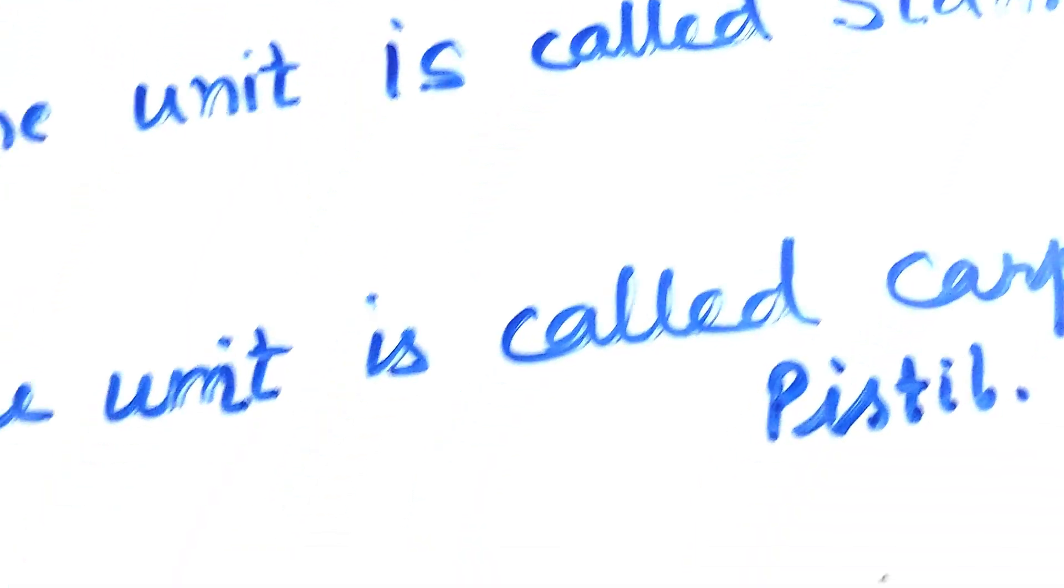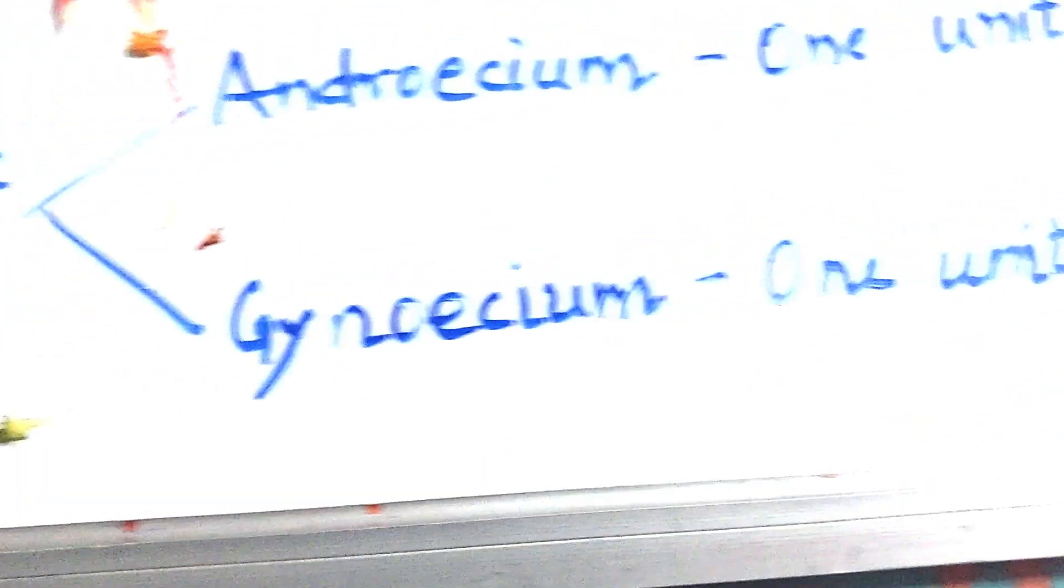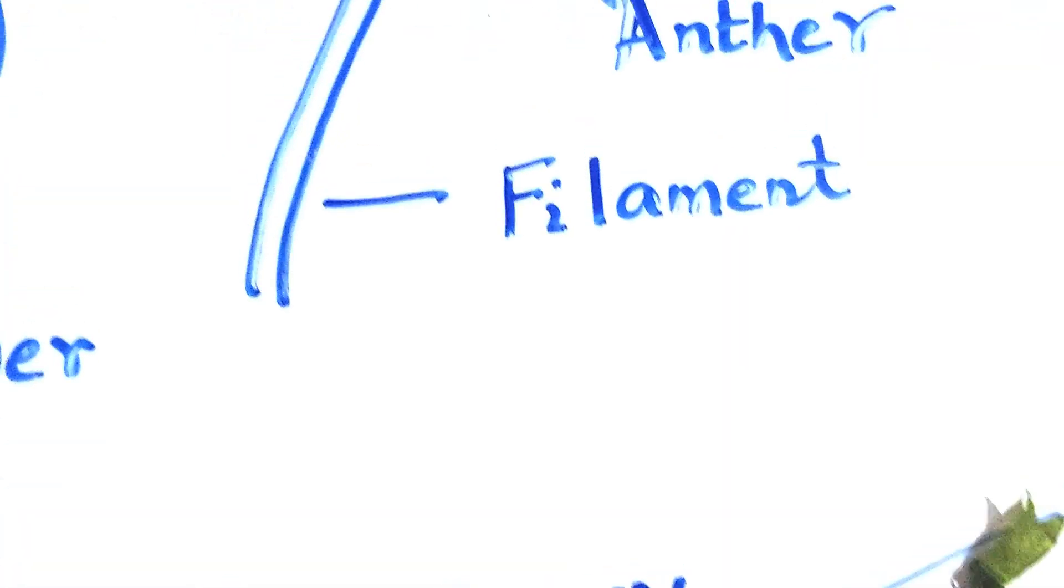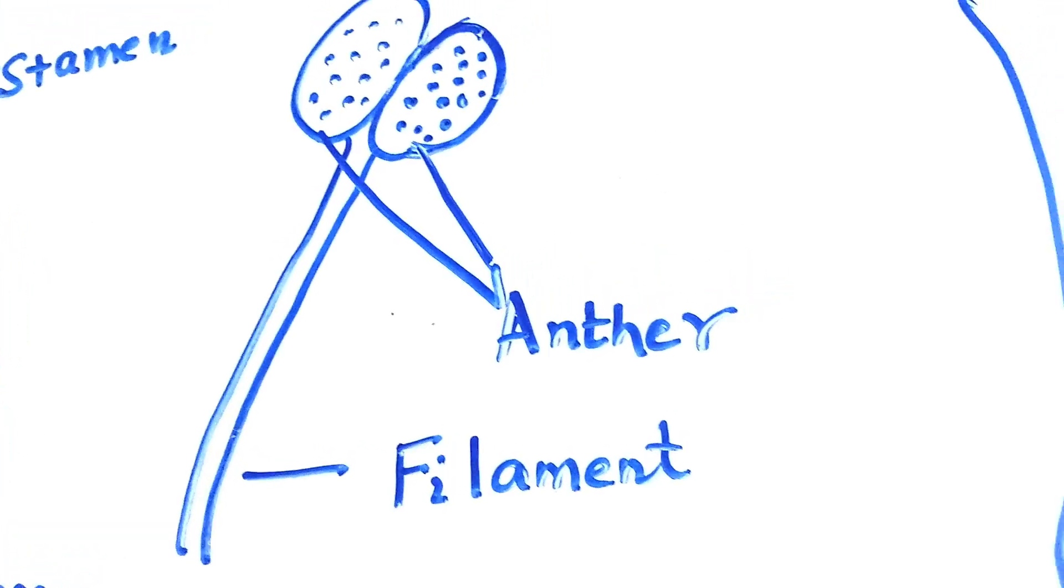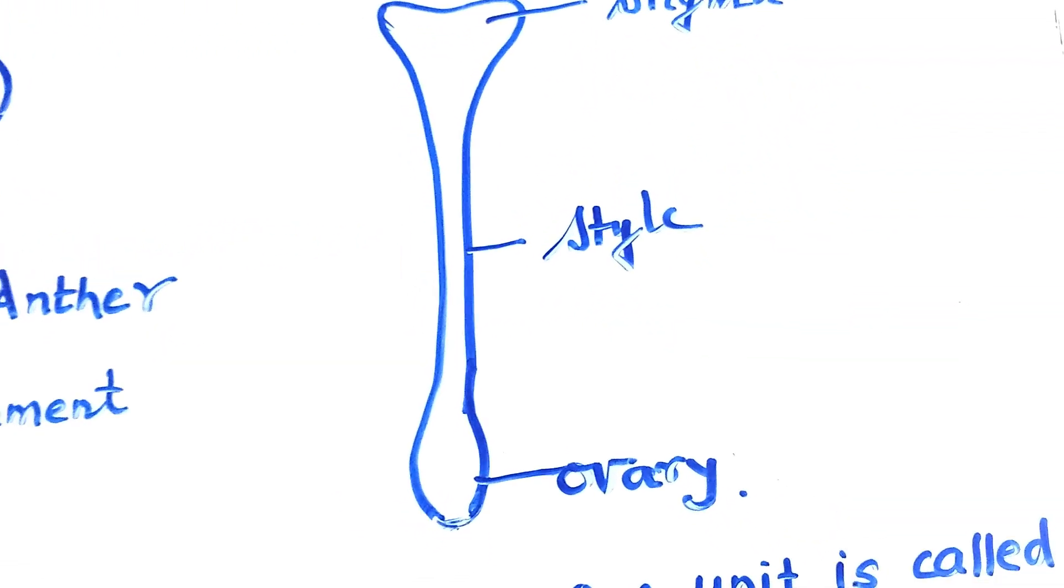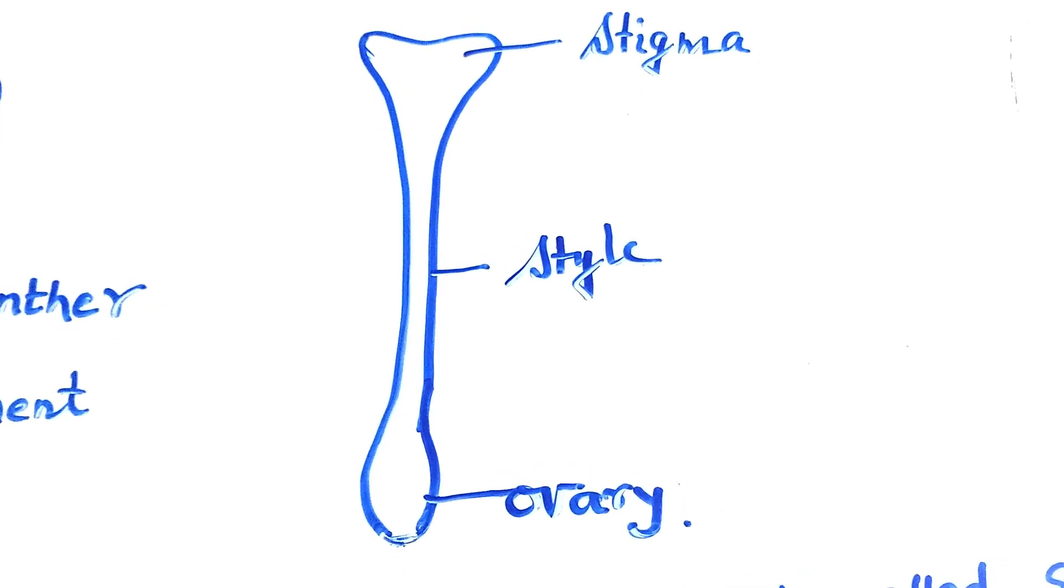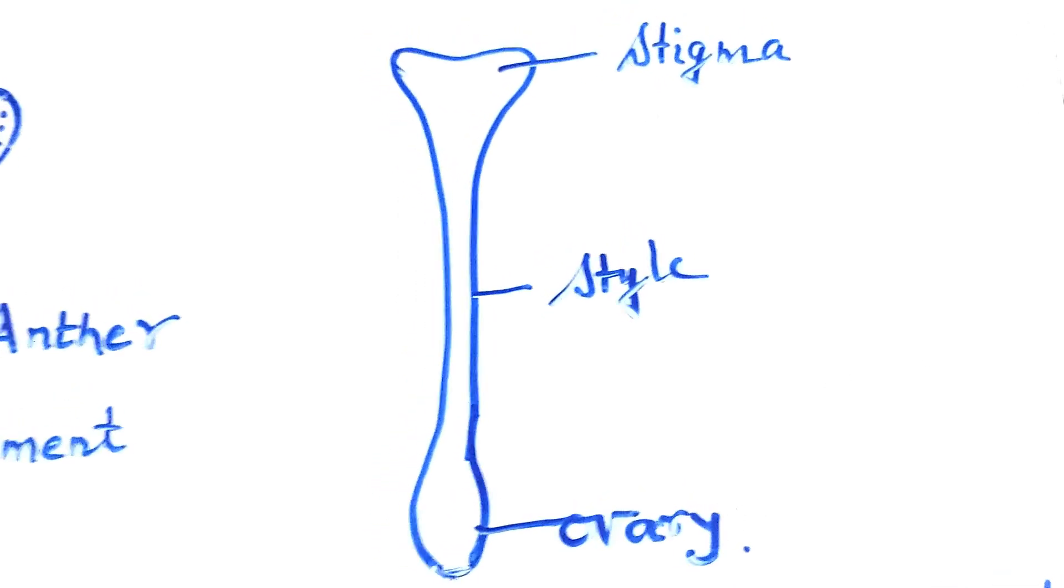Here you can see the anther and the filament. Filament and one anther make the stamen. But three parts of the pistil or carpel are stigma, style, and ovary.